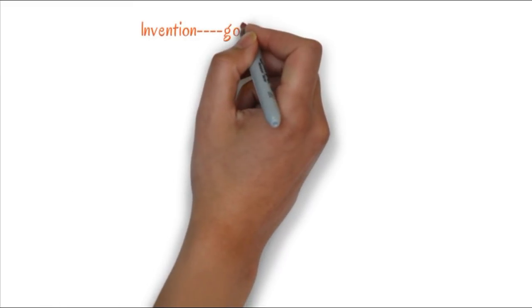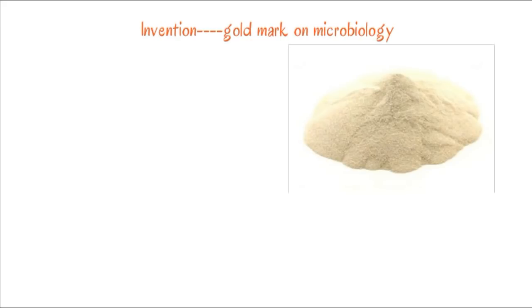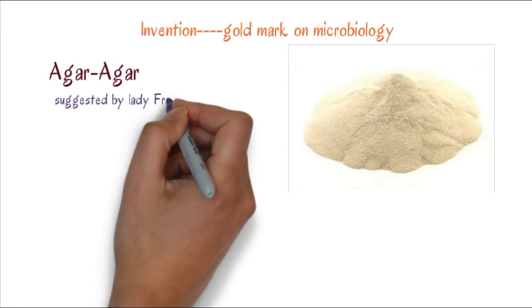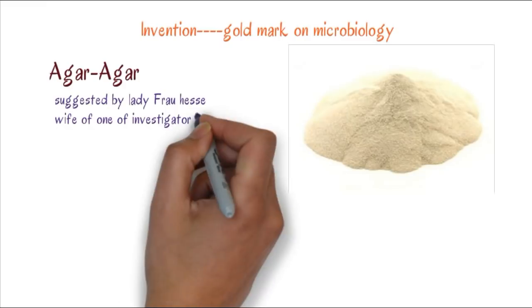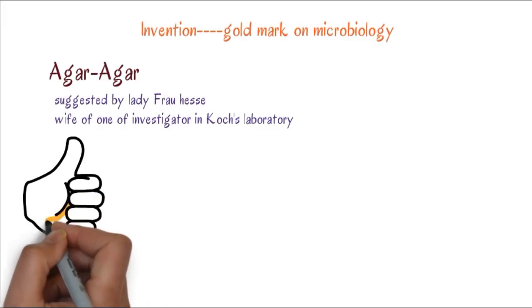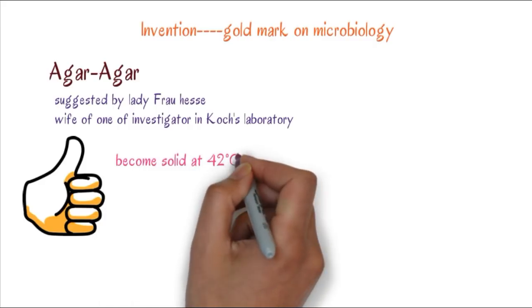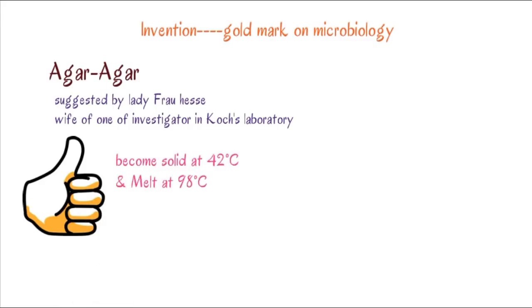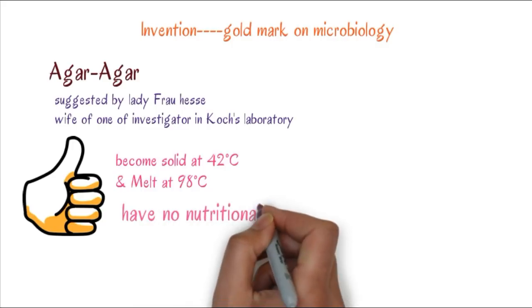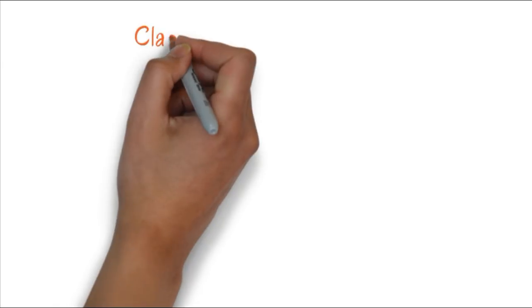The most important invention which made a gold mark on microbiology is agar-agar powder. It was suggested by Lady Frau Hesse, wife of one of the investigators in Koch's laboratory. Why is this worldwide accepted? It becomes solid at 42 degrees Celsius and melts at 90 degrees Celsius. It has no nutritional value. For solidification we put 2% concentration of agar, and it's obtained from seaweeds or sea algae.